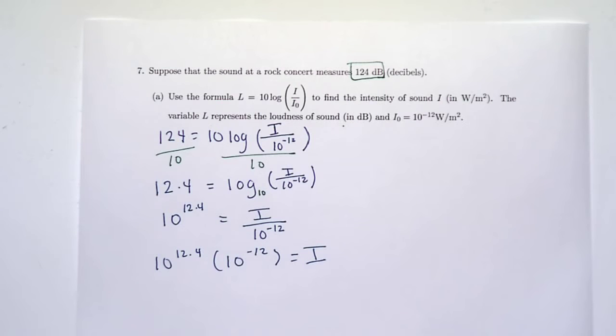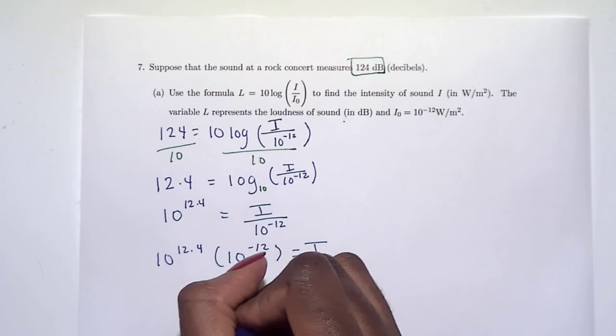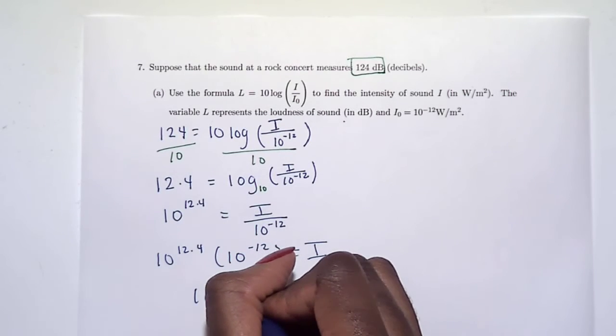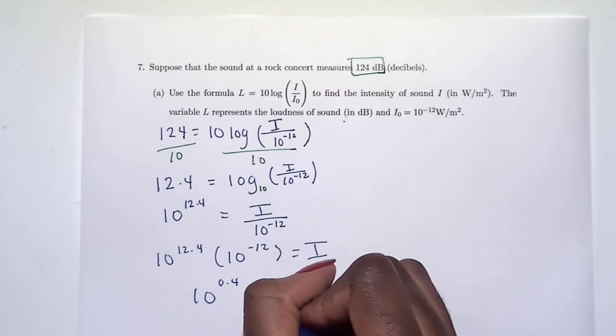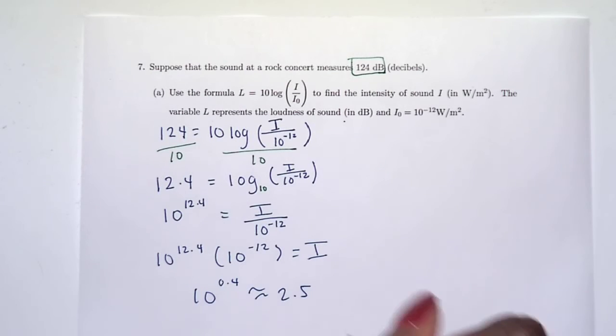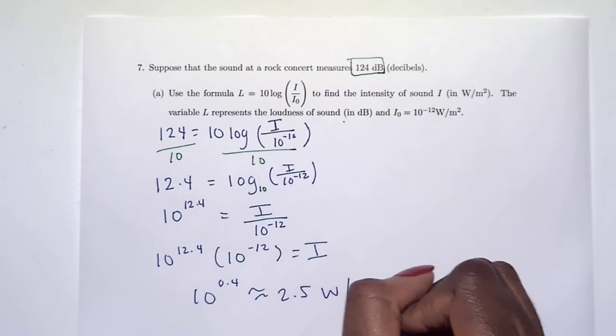We got 10 to the 12.4 times 10 to the negative 12. When we're multiplying two exponents with the same base, what do we do about their powers? We add them together. So we need 12.4 minus 12, so that's 10 to the 0.4, which is about 2.5, whatever these units mean.